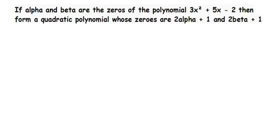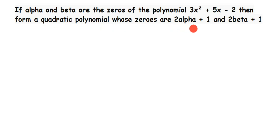Hey everyone, here is a question from polynomials, asked by Asha. If alpha and beta are the zeros of polynomial 3x squared plus 5x minus 2, then form a quadratic polynomial whose zeros are 2 alpha plus 1 and 2 beta plus 1.